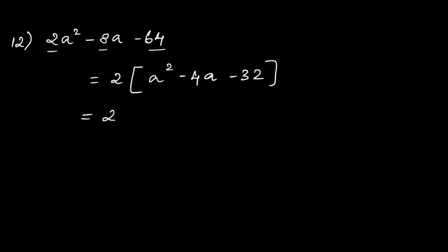Now factorize a²-4a-32. Multiply the coefficient of a² and the numerical value: 1 × (-32) = -32, and we need -4. Take two numbers such that when you multiply them you get -32 and when you add them you get -4. The numbers are -8 and +4, since (-8) × (+4) = -32 and (-8) + (+4) = -4.